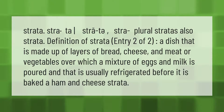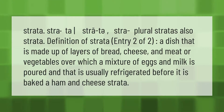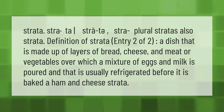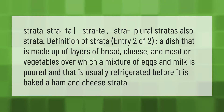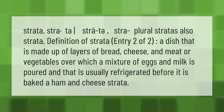An alternate definition of strata: a dish that is made up of layers of bread, cheese, and meat or vegetables, over which a mixture of eggs and milk is poured, and that is usually refrigerated before it is baked — for example, ham and cheese strata.